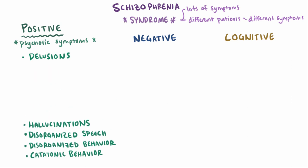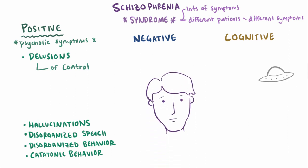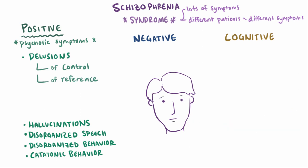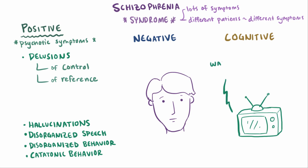Delusions are false beliefs that the person might feel very strongly about, so much so that they won't change their mind even if you give them evidence against it. There are all sorts of different delusions, like a delusion of control, where somebody thinks that some outside force or person is controlling their actions, or delusions of reference, where someone might think that insignificant remarks are directed at them, like a newscaster speaking directly to them through the TV.